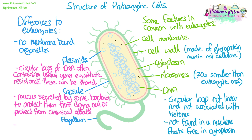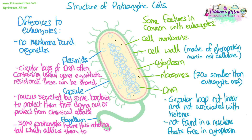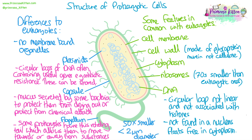The flagellum is a hair-like or tail-like structure that rotates, allowing bacteria to move and often swim through liquid. This gives some bacteria the ability to move towards or away from substances — for example, if they're looking for food. Thinking about the general size of prokaryotic cells, they're around 50 times smaller than eukaryotic cells and less than about two micrometres in diameter.